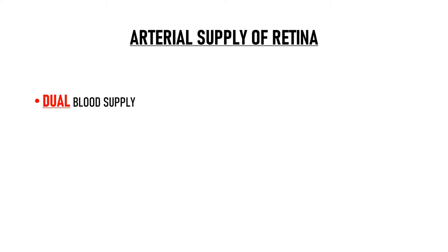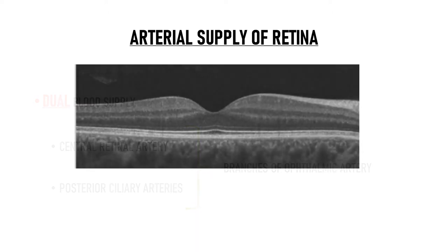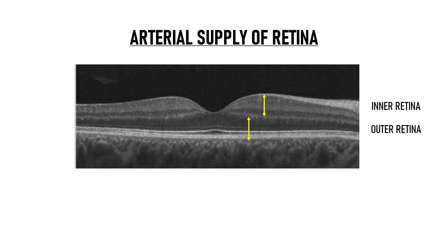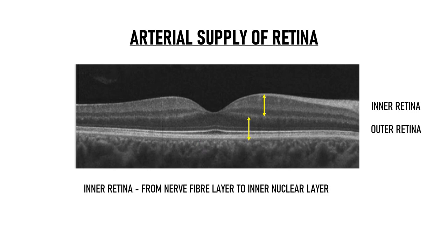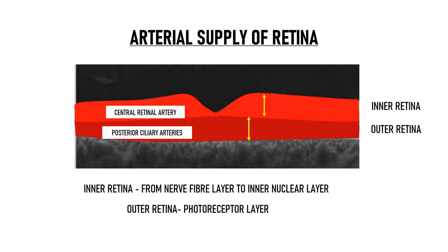Retina has a dual blood supply, meaning it is supplied by two arterial systems: the central retinal artery and the posterior ciliary arteries. Both of them are branches of the ophthalmic artery. The retina can be divided into inner retina and outer retina. The inner retina extends from the nerve fiber layer to the inner nuclear layer, while the outer retina represents mainly the photoreceptor layer. The inner retina is supplied by the central retinal artery, while the outer retina is supplied by the posterior ciliary arteries. The outer plexiform layer, situated at the junction of these two, is believed to receive its blood supply from both systems.